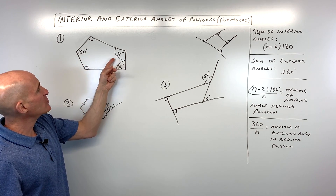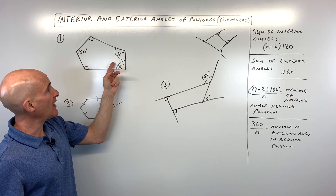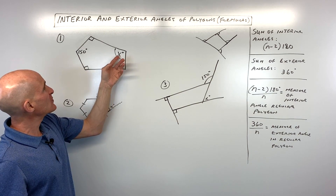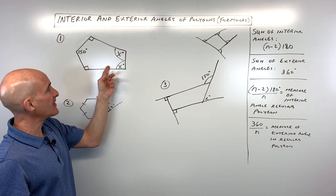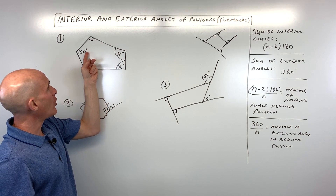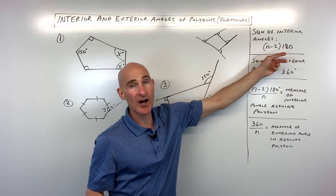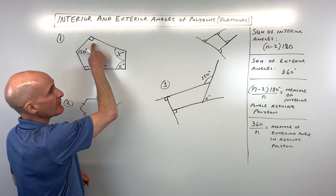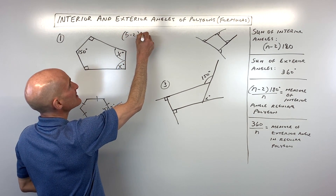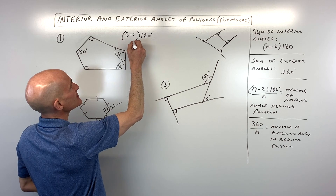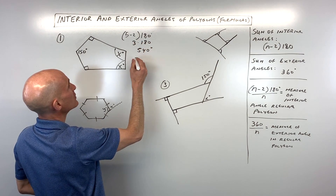Number one: how do you find what these angles are? You can see they're the same — they're both X. The first thing we have to figure out is whether these are interior or exterior angles. They're on the inside, so they're interior. We know all the angles add up to (n-2) times 180. We've got 5 angles, so it's (5-2) times 180, which is 3 times 180 = 540 degrees total.